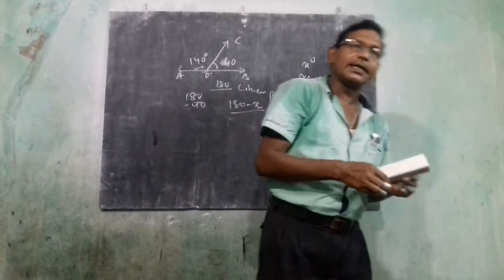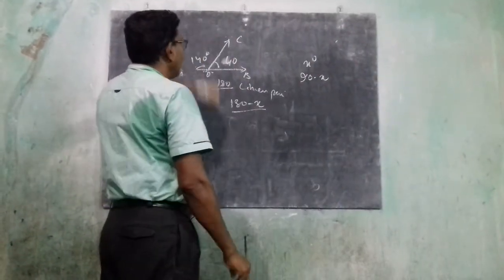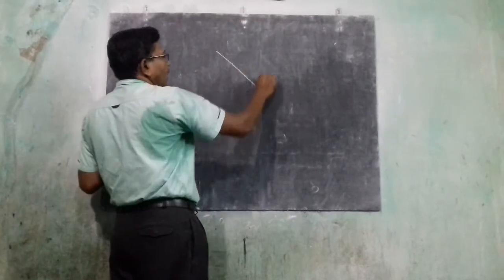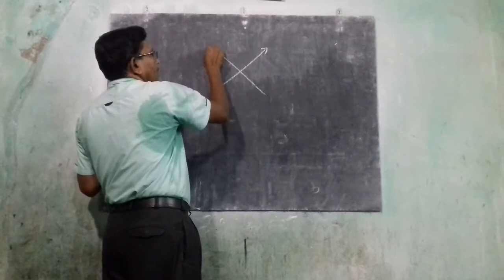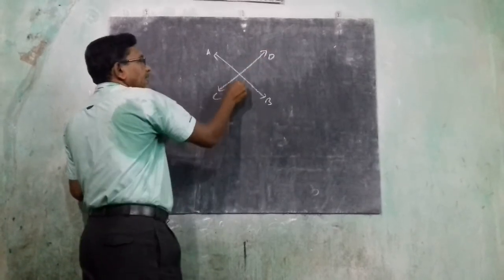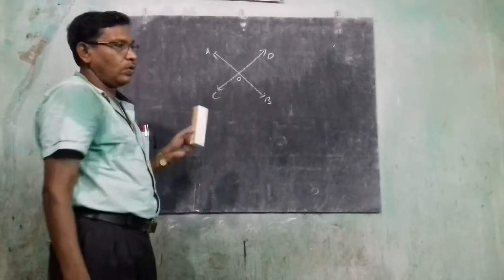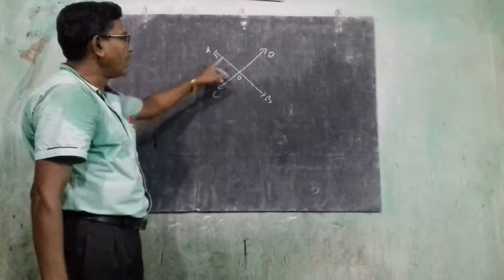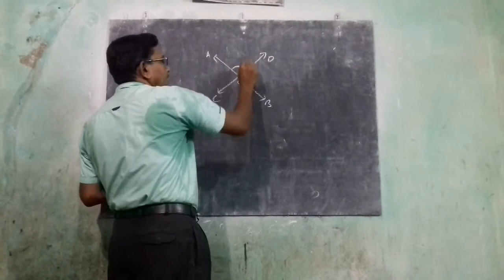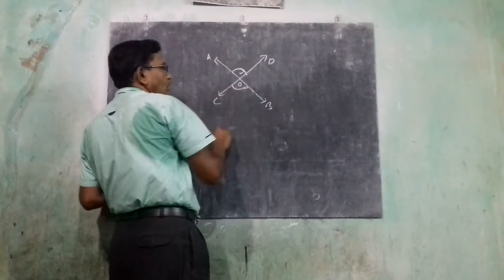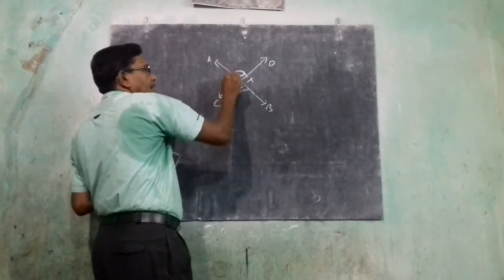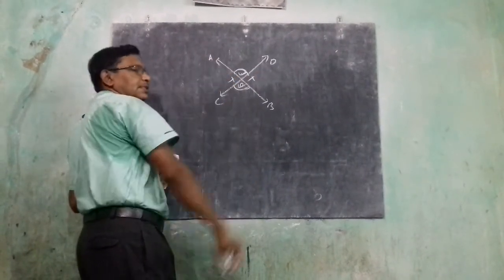Now, vertically opposite angles. When two lines AB and CD intersect each other at point O, the angles formed opposite each other are vertically opposite angles. Angle AOD and angle BOC are vertically opposite, and angle BOD and angle AOC are also vertically opposite angles.